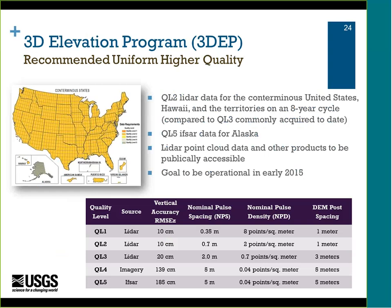The recommended program is uniform quality level two LiDAR for the conterminous United States, Hawaii, and territories on an eight-year cycle, and quality level five IfSAR data for Alaska. LiDAR will not be collected in Alaska for several reasons — one being cloud cover. IfSAR stands for interferometric synthetic aperture radar, and it can see through clouds where LiDAR cannot. That's one of the main reasons for using IfSAR in Alaska.